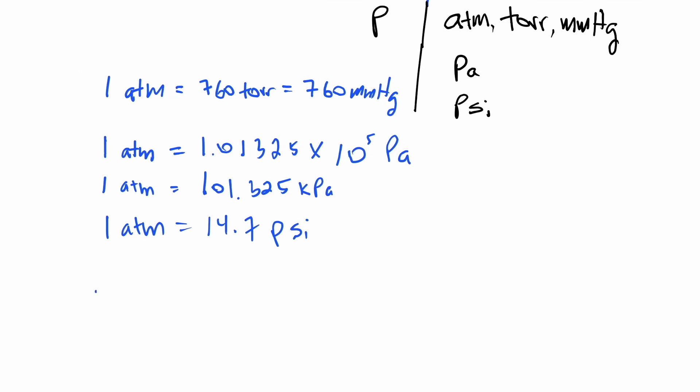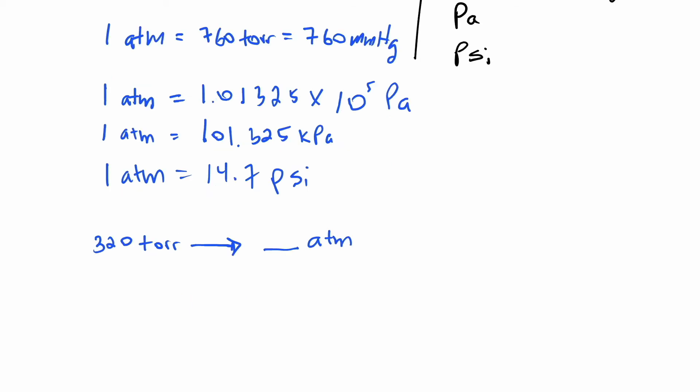Now, let's say you have 320 torr and you want to convert that to atmospheres. All right, so what you want to do is you want to write your 320 and you want to put that over 1.